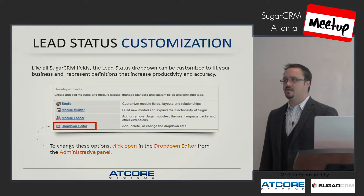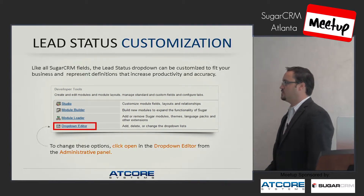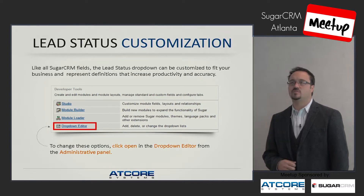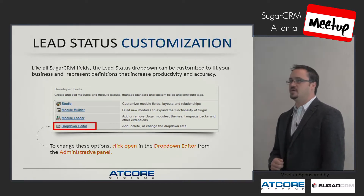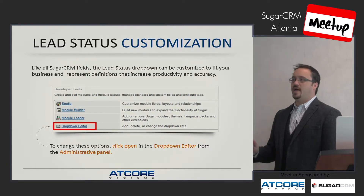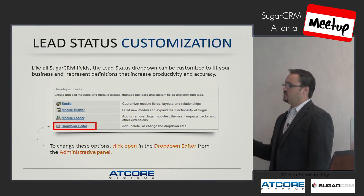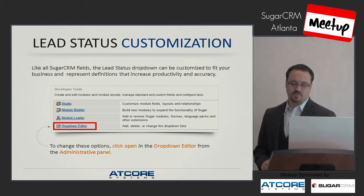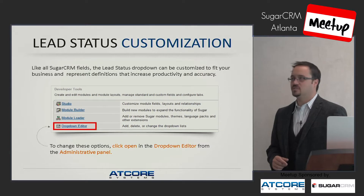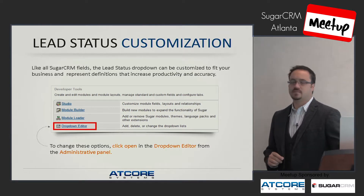We've customized our statuses a lot more than just adding one value. If you want to customize yours, in the admin area of SugarCRM it's very easy to customize fields and drop-downs using the drop-down editor. You'll be able to edit and change all of those values. We're not going to go into Studio today, but you can find all the screenshots on how to do this in our slide deck on slideshare.com/atcoresystems.